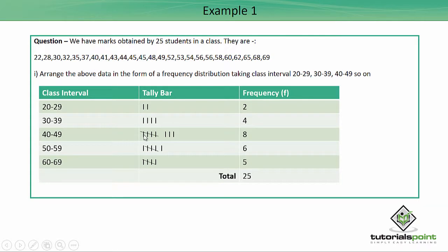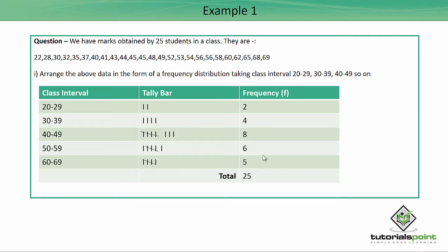Next, 40 comes in the class interval 40 to 49, and 43 also falls here. Then 41 adds one more tally bar, followed by 44. After four tally bars, remember the fifth one is marked diagonally as a slash. So 45 becomes the next tally bar, then 48, and then 49.